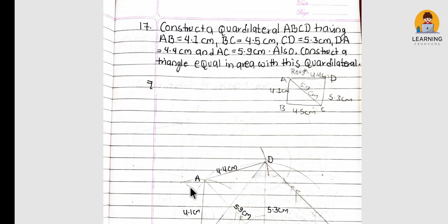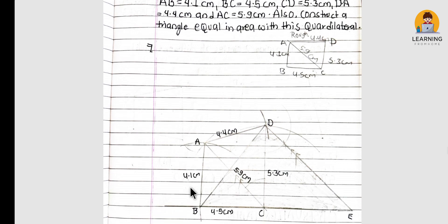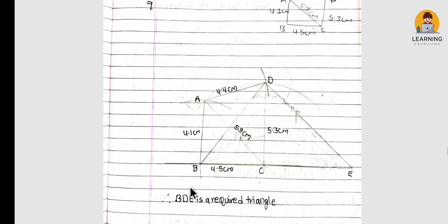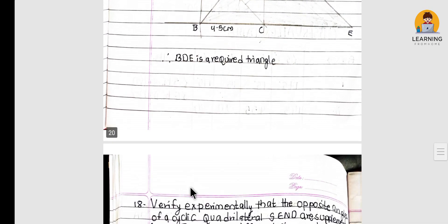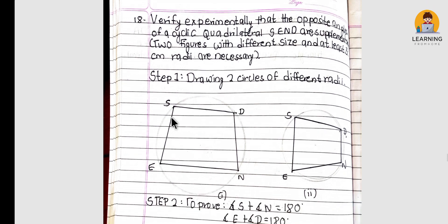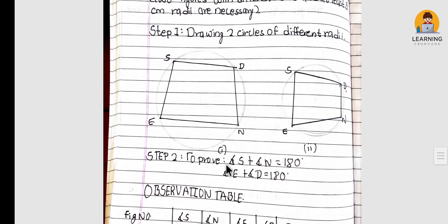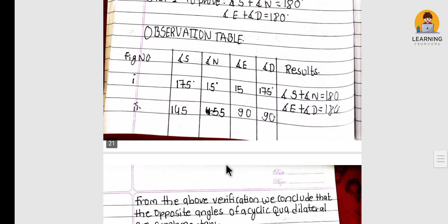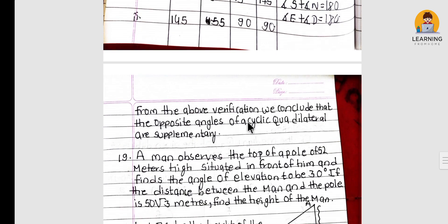This is a construction and experimental verification question. Verify experimentally that the opposite angles of a cyclic quadrilateral are supplementary. From the above verification, we conclude that the opposite angles of a cyclic quadrilateral are supplementary.